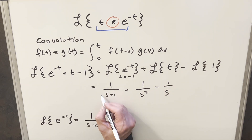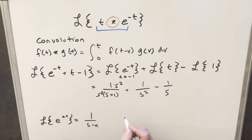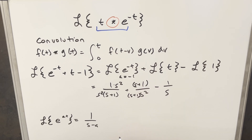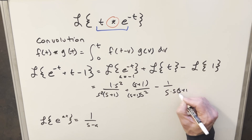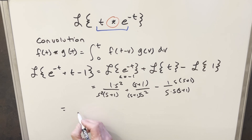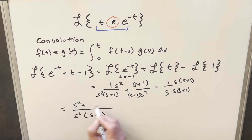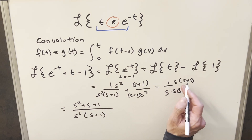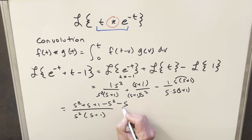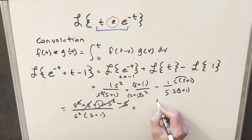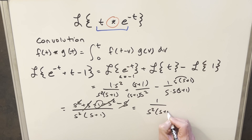Now I'll get a common denominator. For the first term multiply by s squared, for the second multiply by s plus 1, and for the third multiply by s times s plus 1. Our common denominator is s squared times s plus 1. Combining all the numerators gives s squared plus s plus 1 from the first term, then distributing the third gives minus s squared minus s. The s squared terms cancel and the s terms cancel, so what we're left with is just 1 over s squared times s plus 1.